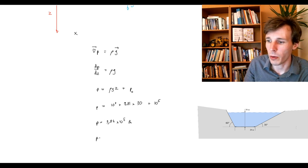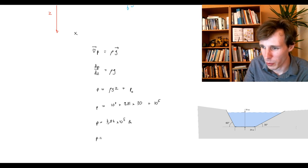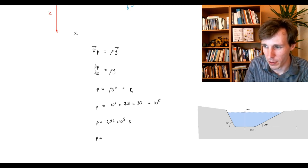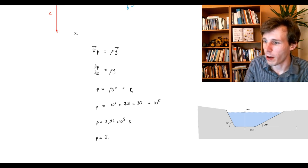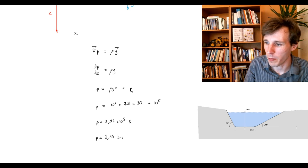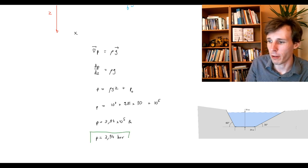And we convert this into bar usually as engineers. And this is of course, I'm sorry, I wrote this poorly. This should have been a three. This is a three, like so. 3.94 bar of pressure at the bottom of the lake here.